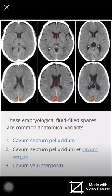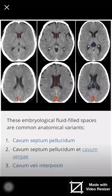We cannot see cavum vergae without cavum septum pellucidum, so we see pellucidum first, then vergae, then velum interpositum. Or we can see all three together. We cannot see velum interpositum alone without pellucidum or vergae. Thank you for listening.